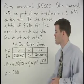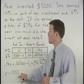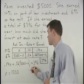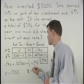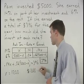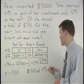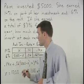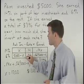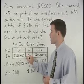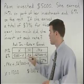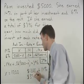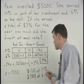So we know that Pam invested $1,200 at 14% interest. And the amount she invested at 6% is represented by 5,000 minus x, which is 5,000 minus 1,200, or $3,800 at 6%.